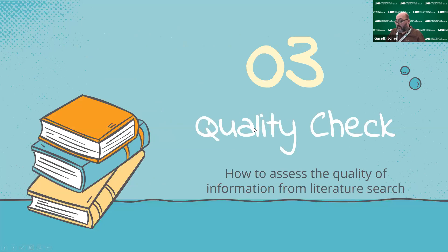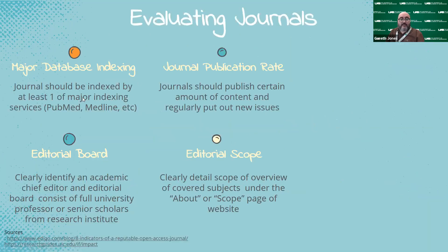Let's talk about quality check — how to assess how valuable that information is, how high up the index it is, how connected it is to your research. Journals that are indexed by at least one major indexing service gives it a high rating — such as PubMed and Medline. The rate at which it is published matters: journals should publish a certain amount of content and regularly put out new issues. If it's sporadic, it may not be as reliable a source. You want to look at the editorial board and make sure it has an academic chief editor.